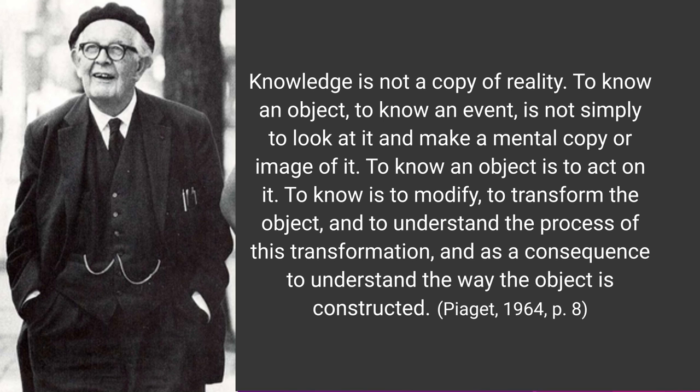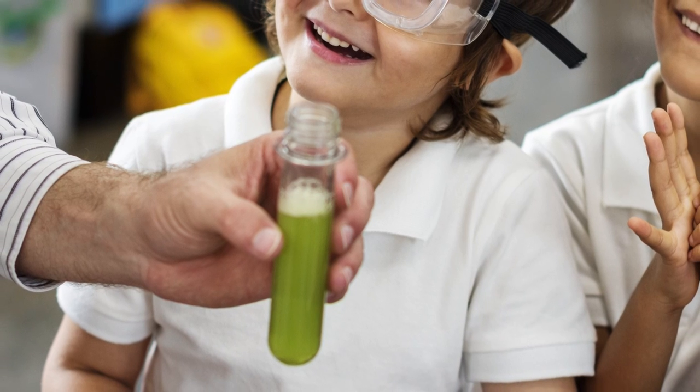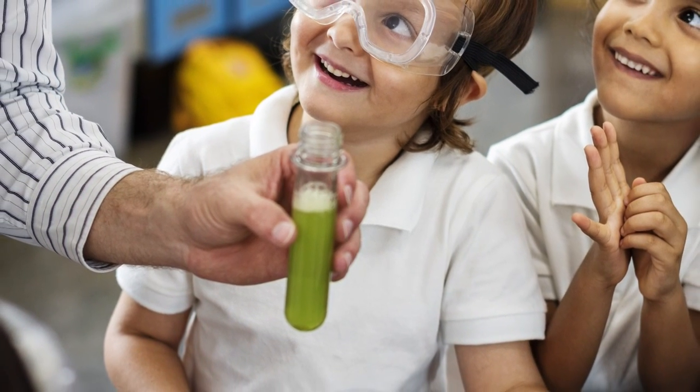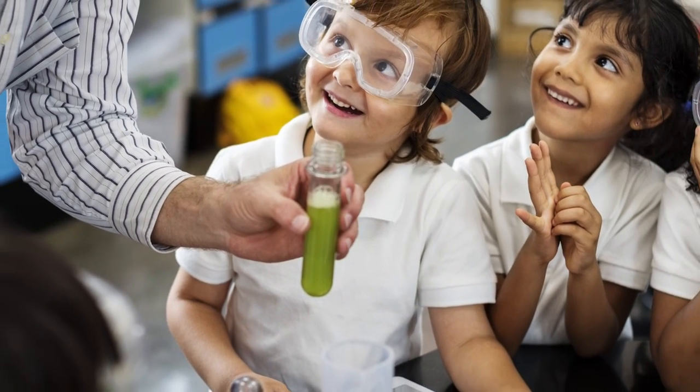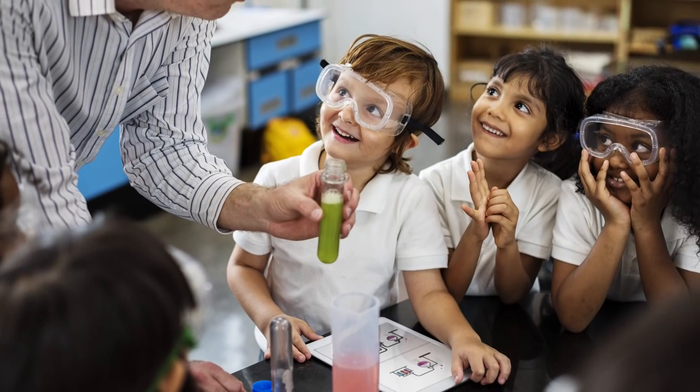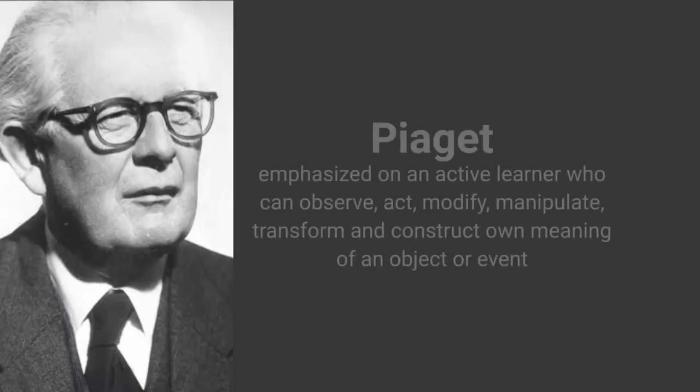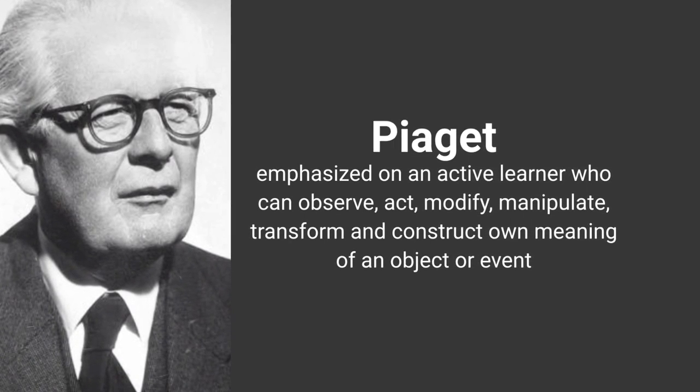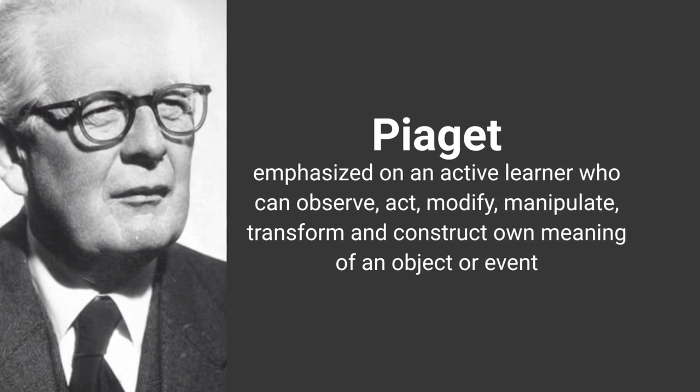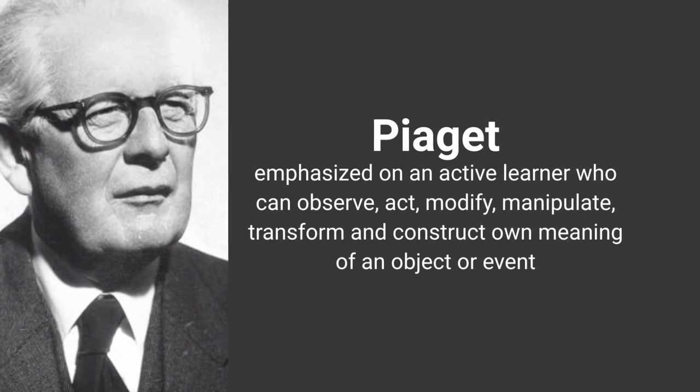If you are seeing something and just making a copy or image of it, that is not learning. Learning means you deal with the object, try to play with it, use your experiences, and try to transform it — understanding how the transformation is taking place and what the process is. Piaget talked about the active engagement of the learner in the learning process through which knowledge is constructed. His most important point was emphasizing an active learner who can observe, act, modify, manipulate, transform, and construct their own meaning of an object or event.